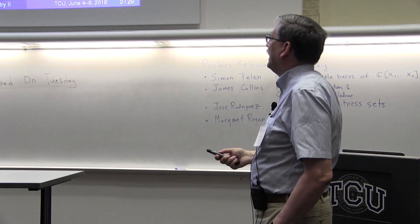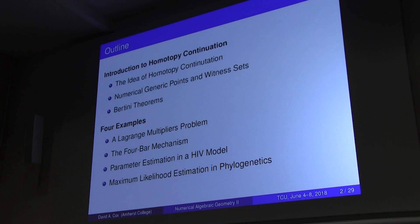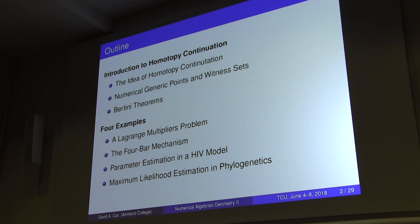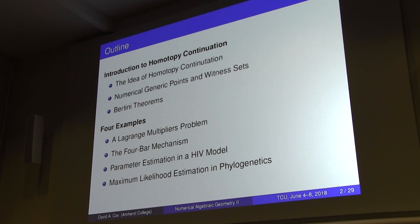The second part of the talk will cover four fairly substantial examples. I'm going to revisit the Lagrange multipliers problem from this morning and think about it from the point of view of Bertini. I'll talk about the four-bar mechanism, a more substantial computation. Then I'll talk about parameter estimation in the HIV model — our first encounter with a biochemical reaction network, which we'll see more of on Friday. And we'll also talk about maximum likelihood estimation, our first foray into algebraic statistics.